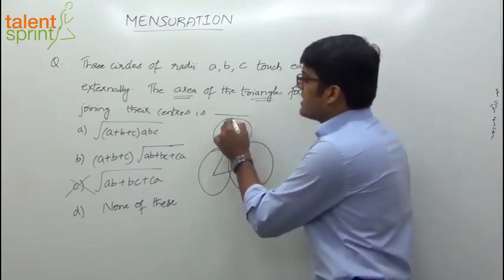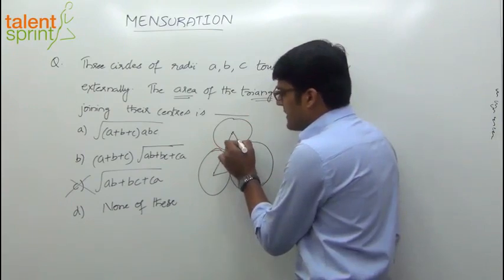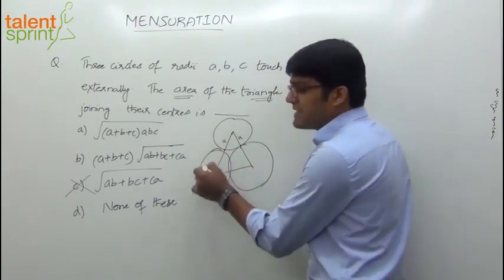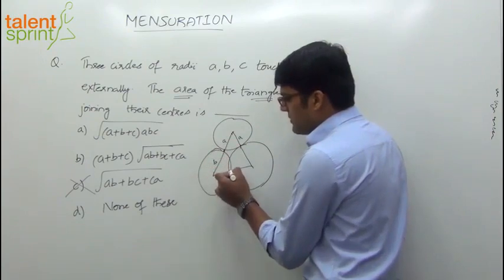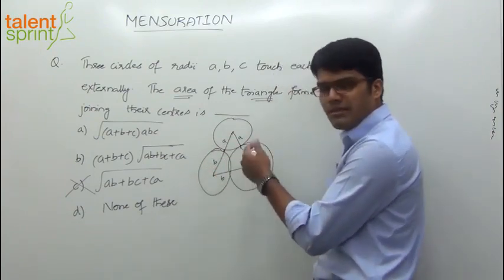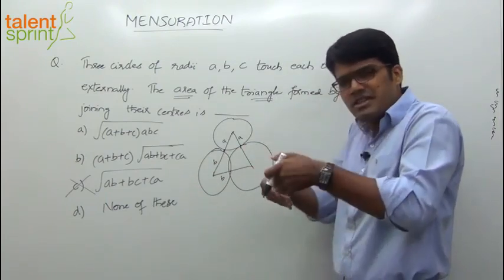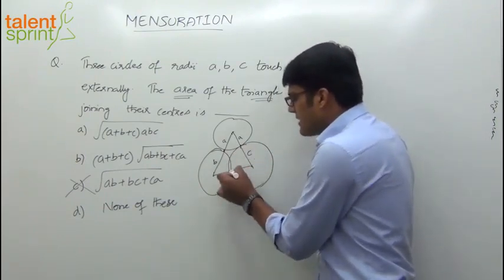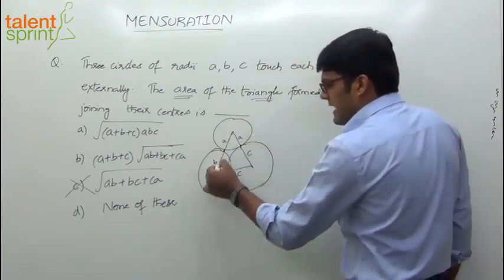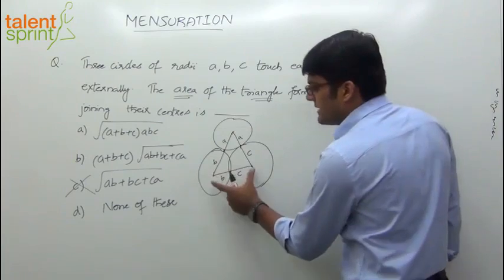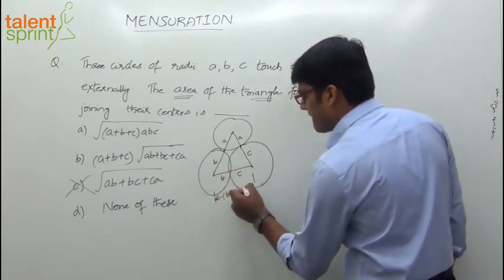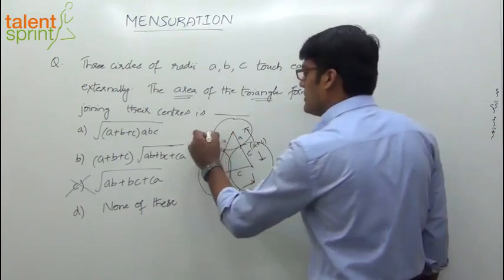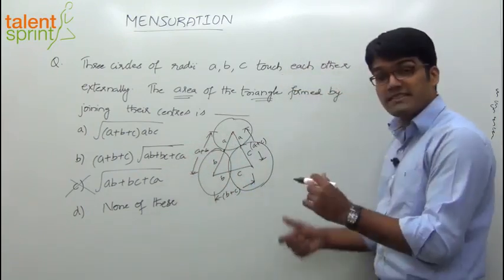Let's say this is the circle of radius A — from the center to the circumference is A. This is the circle with radius B — from center to circumference is B. These circles should not overlap; they just touch each other externally. Similarly, from the center of the third circle to its circumference is C. If you observe, the triangle formed by joining the centers has three sides: one side is B plus C, another is A plus C, and the third is A plus B.